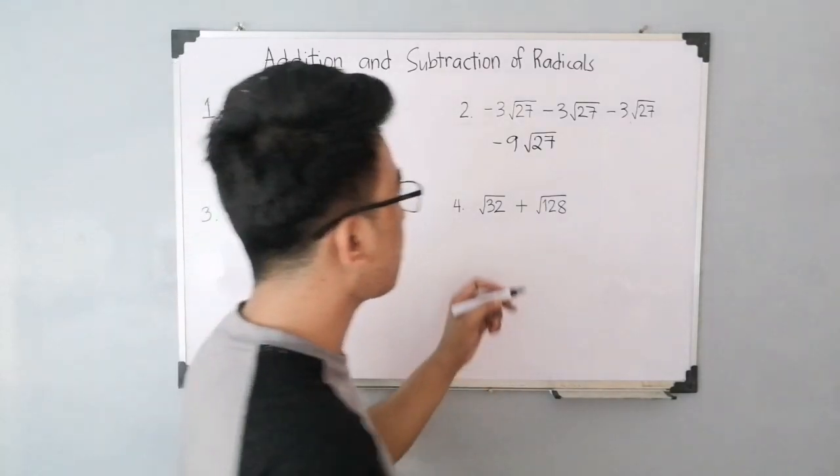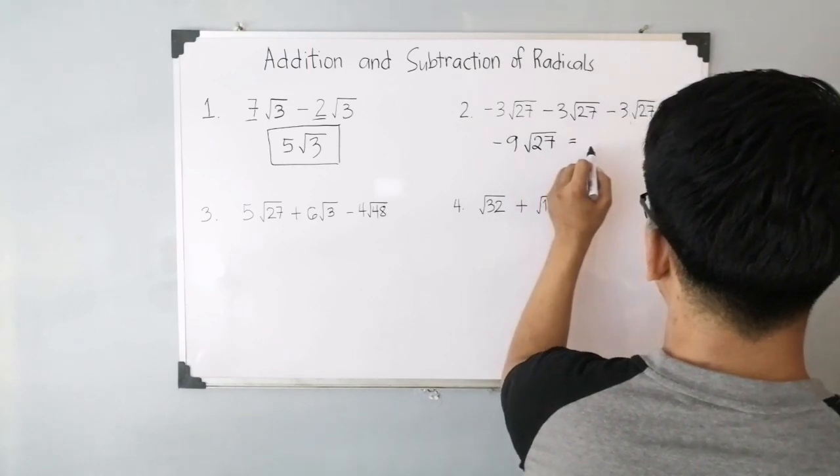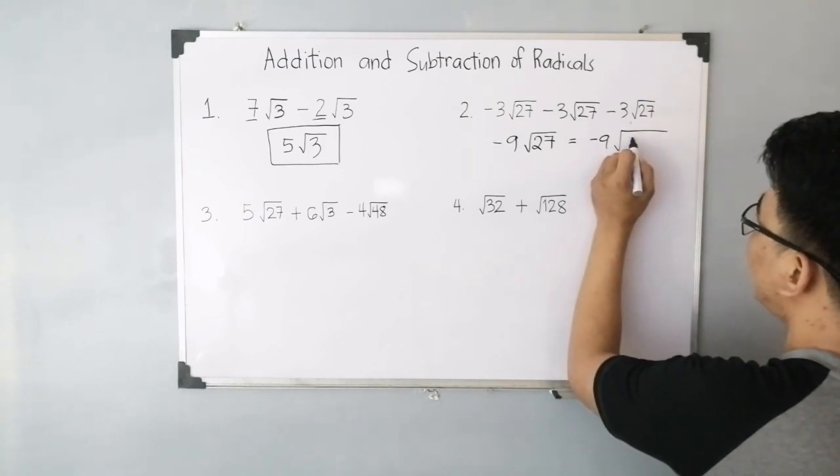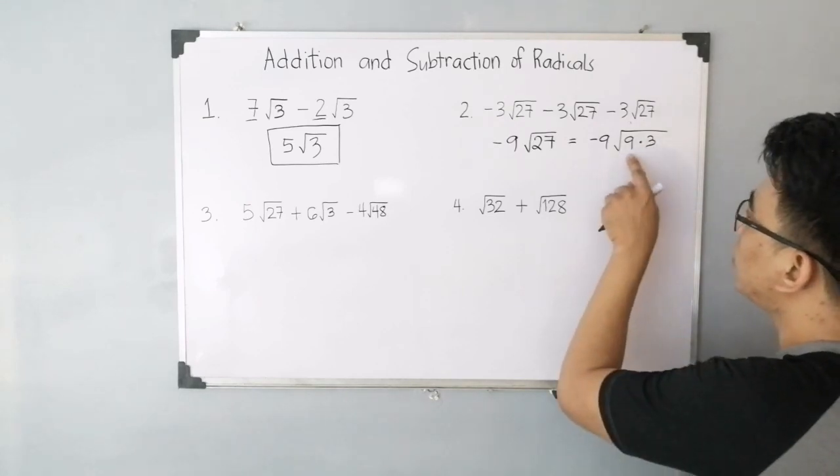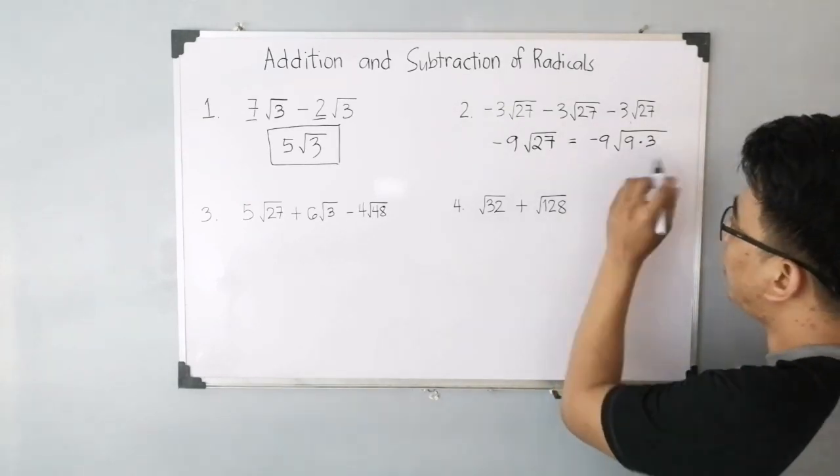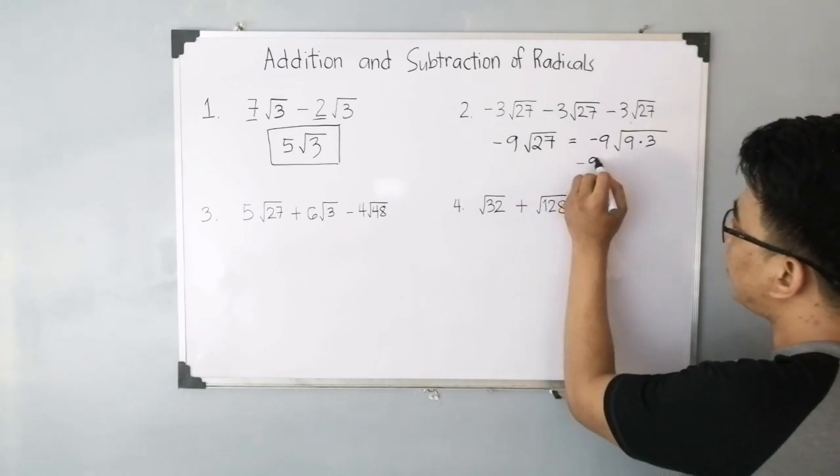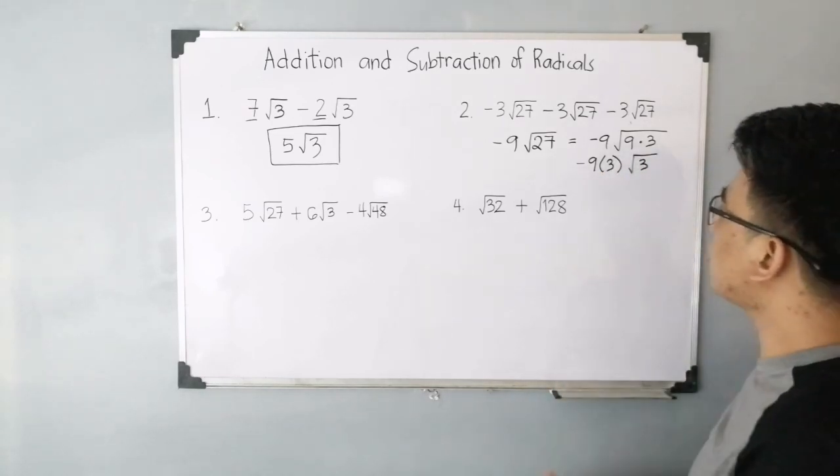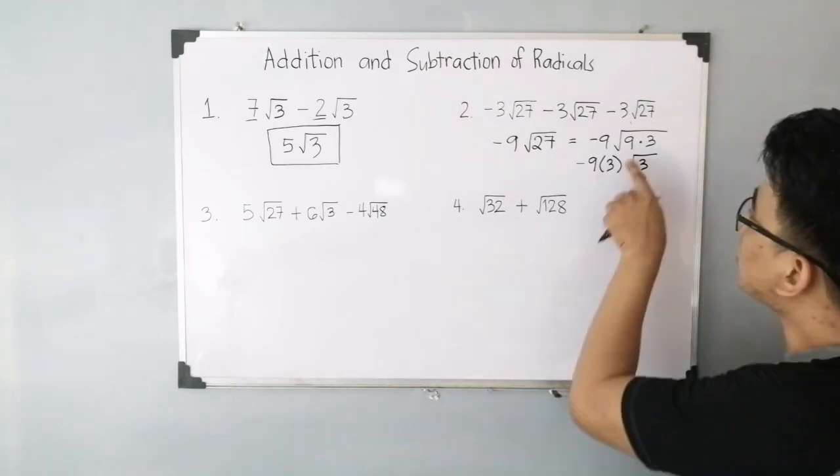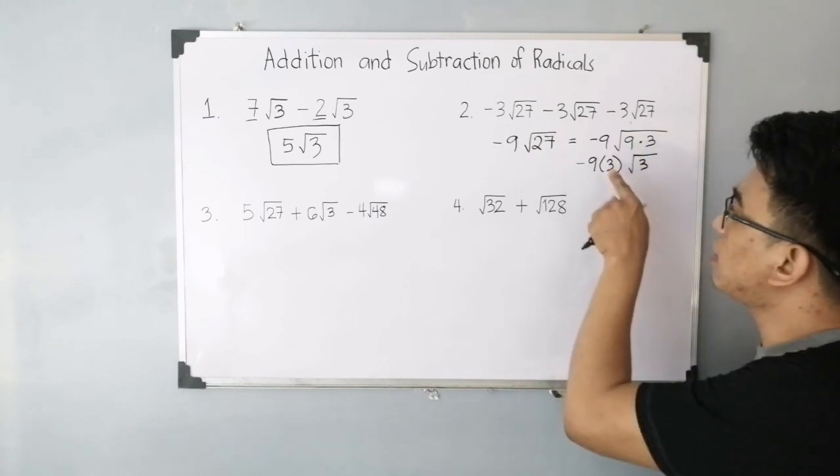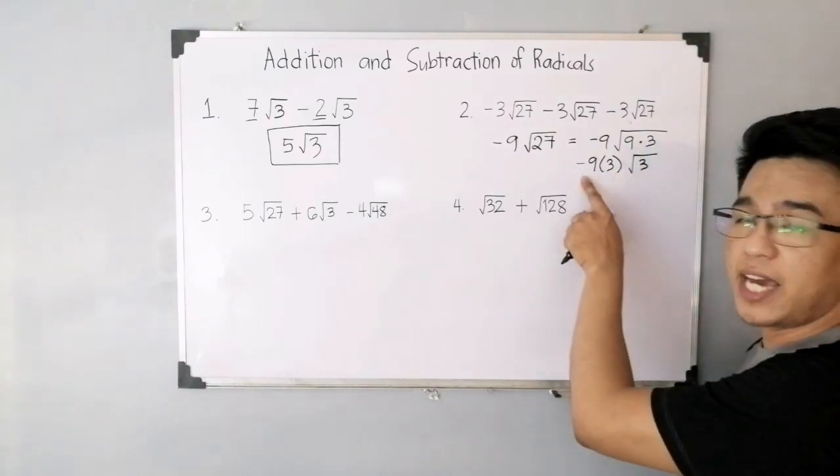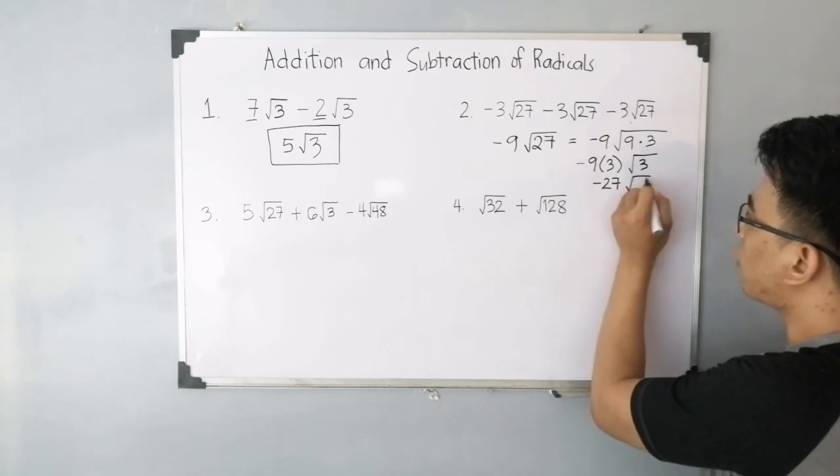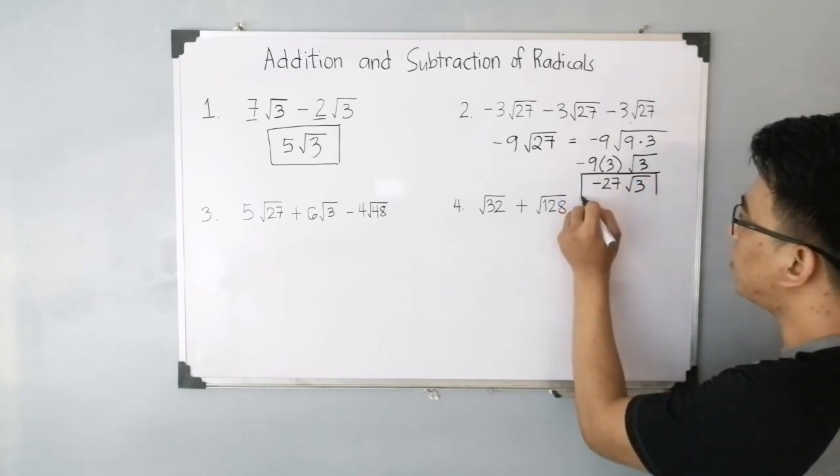Now we can simplify the square root of 27. The factors of 27 are: we have negative 9 times the square root of 9 times 3. And we know that the square root of 9 is 3. So we can extract it and have this expression: negative 9 times 3. And what remains is the square root of 3. We extracted the square root of 9 and the square root of 9 is 3. Then multiply them: negative 9 times 3. This will give you negative 27 times the square root of 3. And this is the answer for item number 2.